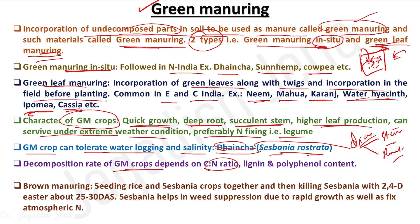The decomposition rate of a green manure crop mostly depends on the C:N ratio, lignin, and polyphenol content. We need to incorporate the crop at the early vegetative stage because if it reaches flowering or pod development stage, the lignin and polyphenol content becomes higher, making it more resistant to decomposition. Bacteria, fungi, and actinomycetes cannot act properly on biomass high in lignin and polyphenol. So a green manure crop should be low in C:N ratio and low in lignin and polyphenol content.